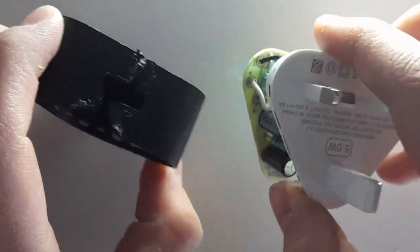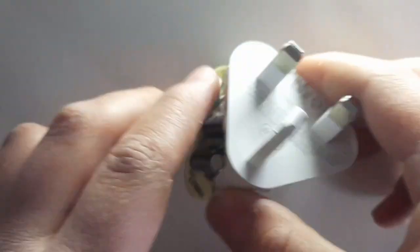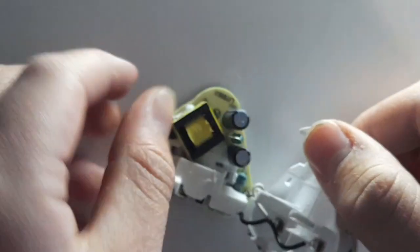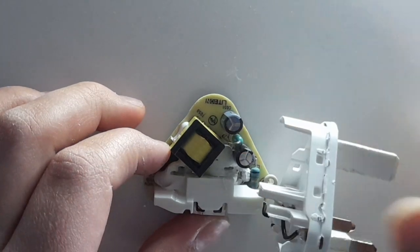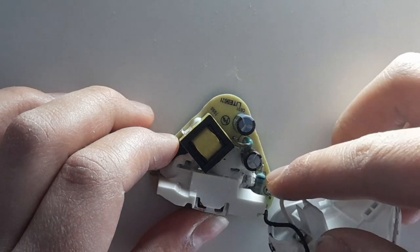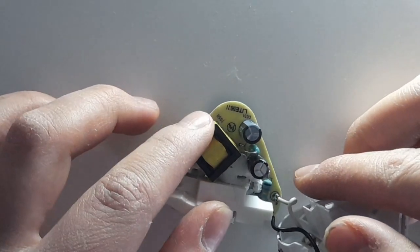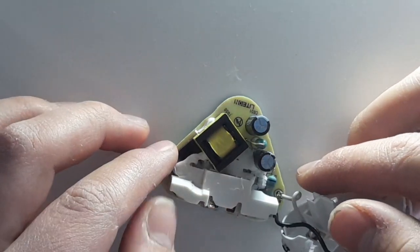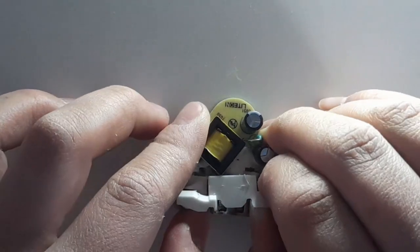Here we have a few capacitors, resistors, and a transformer which probably steps down the voltage. Let me try and get this plastic off so you can see a bit further. There we go.